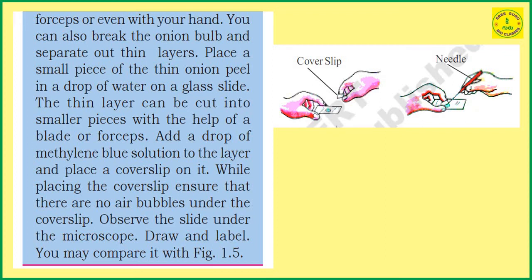Place a small piece of the onion peel in a drop of water on a glass slide. Then add one drop of methylene blue to the layer. Place a coverslip over it and observe under the microscope. While placing the coverslip, ensure that there are no air bubbles under the coverslip. Observe the slide under the microscope, draw and label — you may compare with figure 1.5.